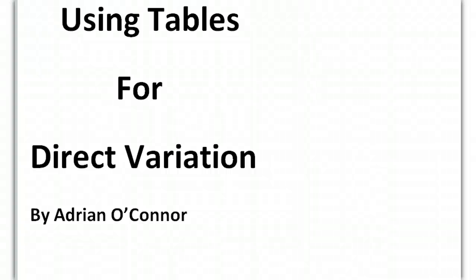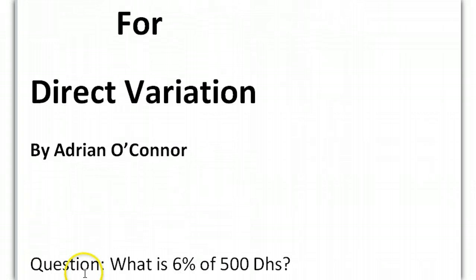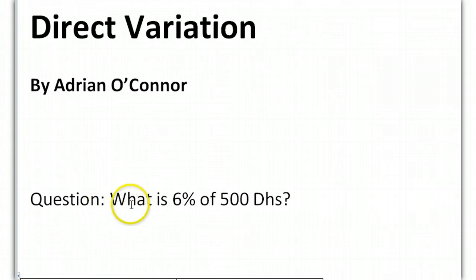This is a short video about using tables for direct variation. Let's move into a question. What is 6% of 500 dirhams?